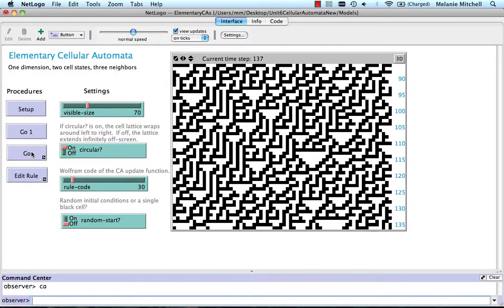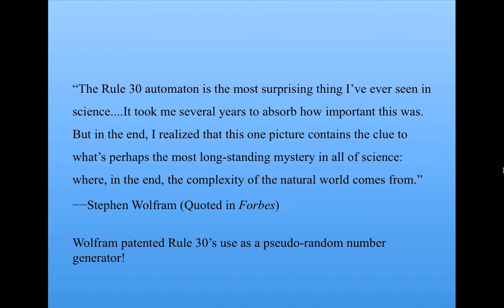Rule 30, along with rule 110, were two very well-known elementary cellular automata that give complex behavior, and were well studied by Stephen Wolfram. In fact, it was observing the behavior of these rules that got him particularly interested in cellular automata. Later, after studying it for many years, Wolfram said in Forbes magazine: 'The rule 30 automaton is the most surprising thing I've ever seen in science. It took me several years to observe how important this was. But in the end, I realized that this one picture contains the clue to what's perhaps the most long-standing mystery in all of science — where the complexity of the natural world comes from.'